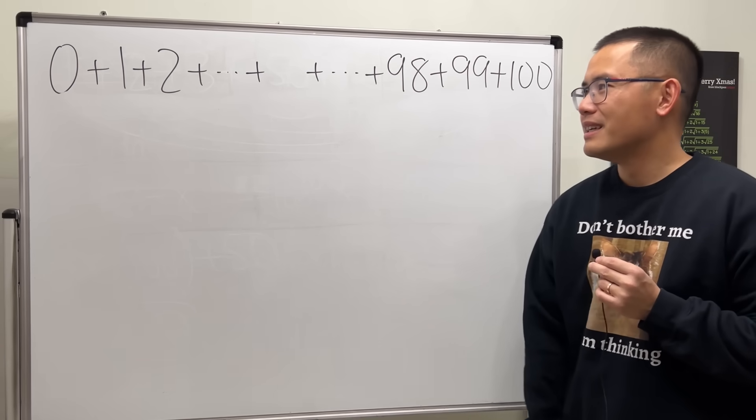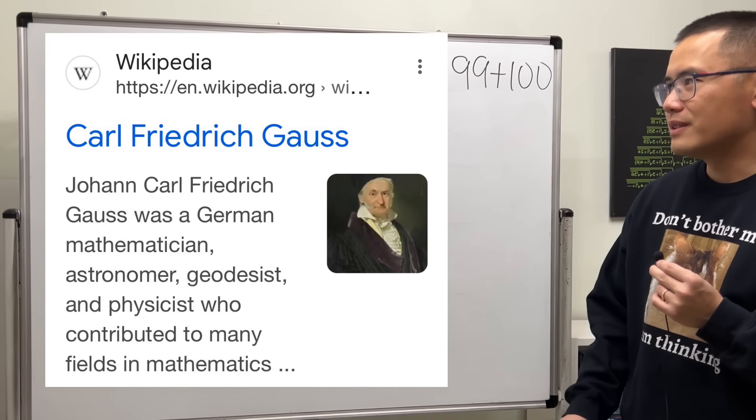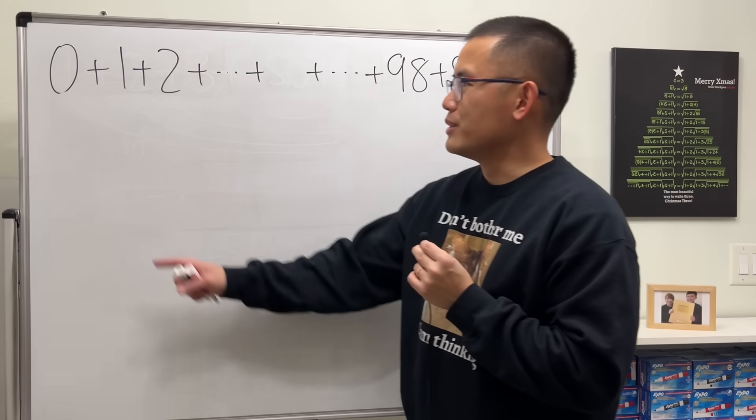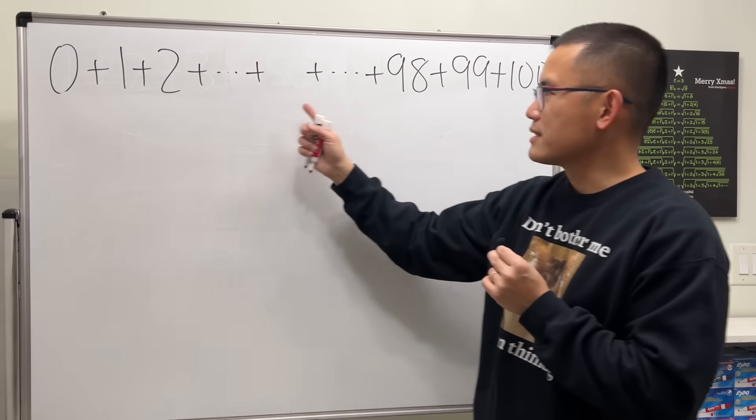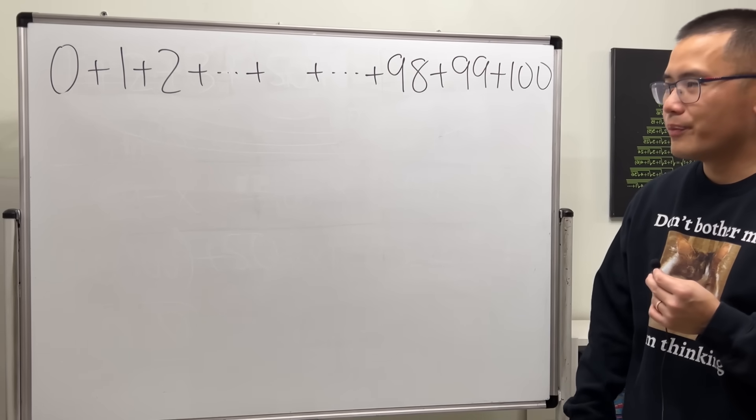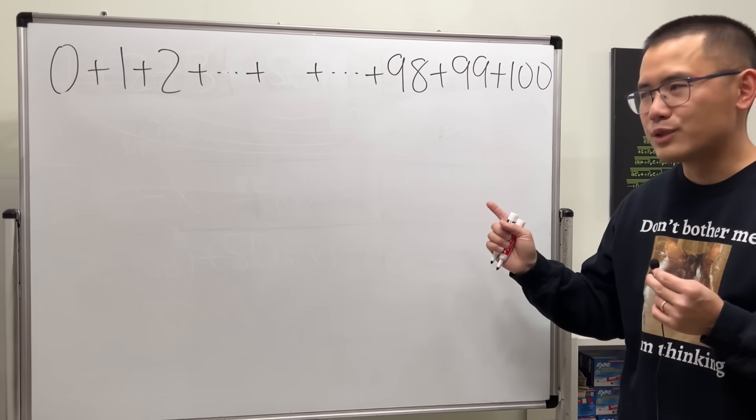It was first solved by Gauss. So let's take a look. Essentially we're just trying to do this: 0 + 1 + 2 + ... up to 100. So how do we do it though? I don't have a calculator. Well, we can do it the Gauss way.